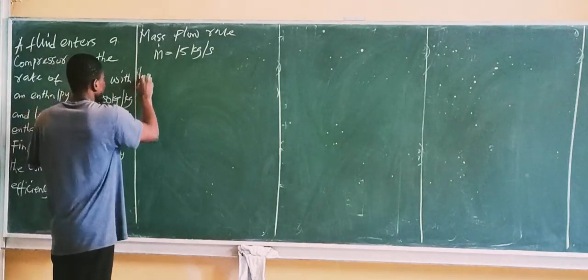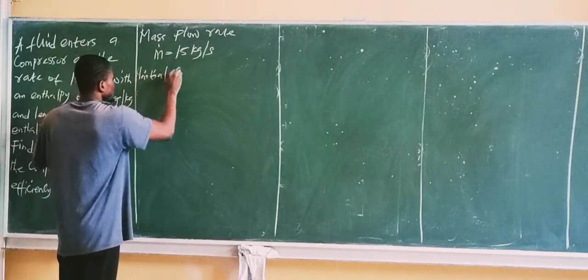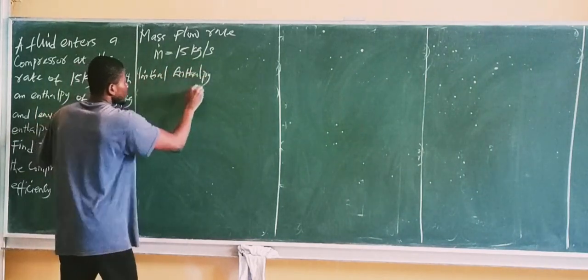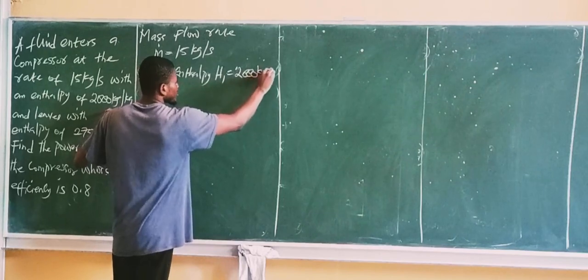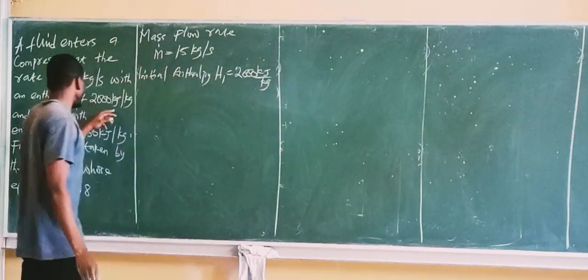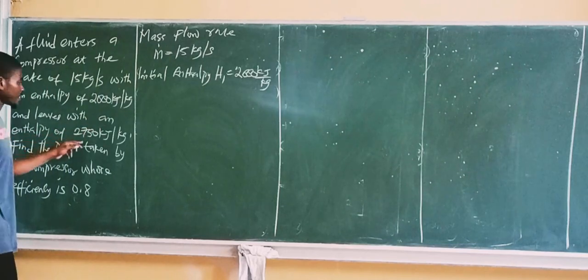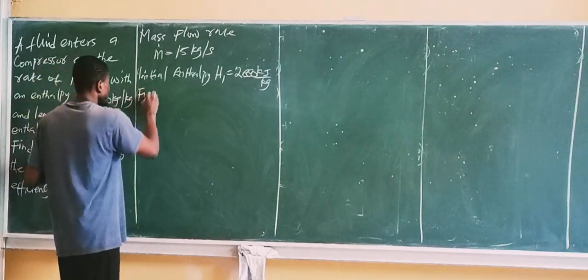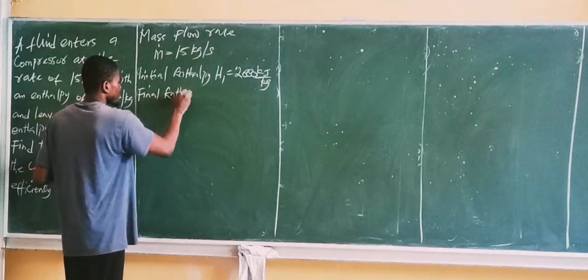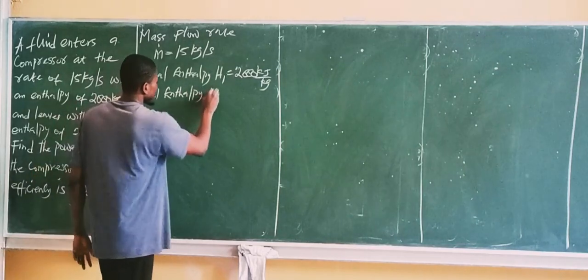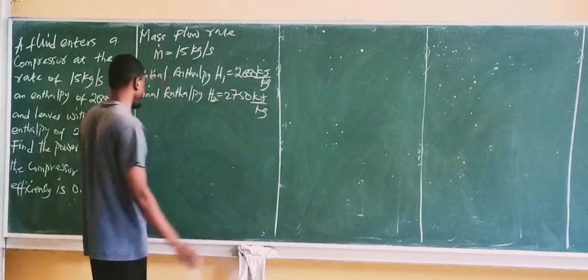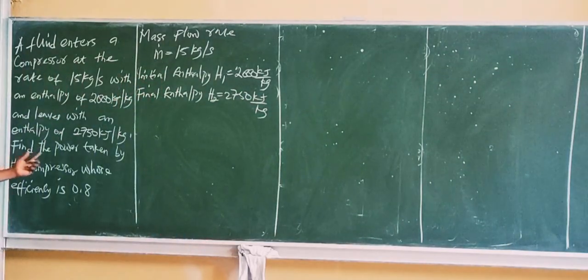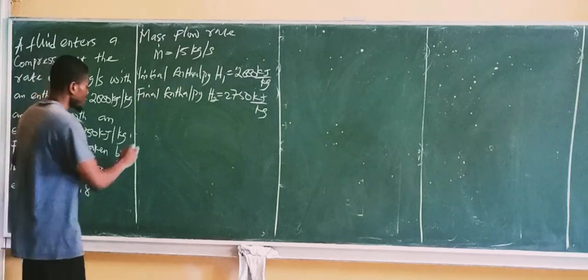The initial enthalpy, H1, is given as 2,000 kJ per kg. The final enthalpy, H2, is given as 2,750 kJ per kg. The efficiency of the compressor is also given. The question asks us to find the power taken by the compressor.